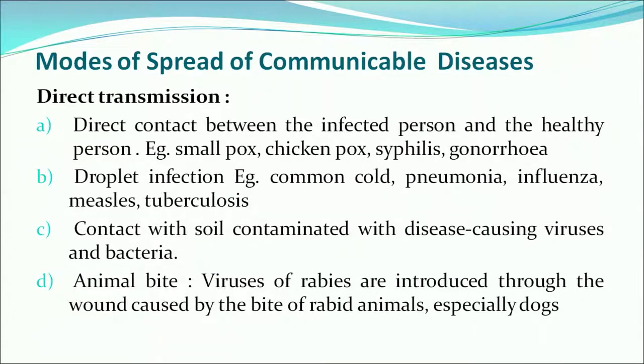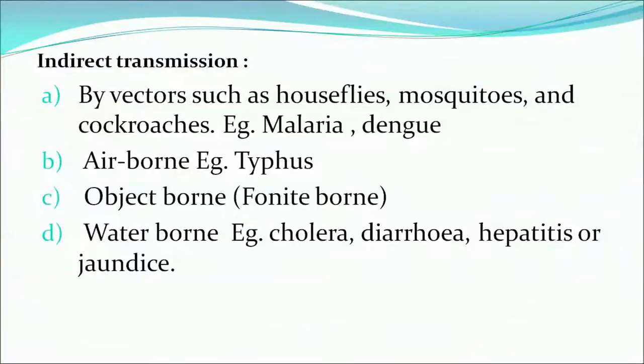It can also occur through animal bite. Indirect transmissions include vectors such as houseflies, mosquitoes and cockroaches — common examples are malaria and dengue. Then you have airborne diseases, example is typhus. You also have fomite-borne and waterborne diseases, examples being cholera, diarrhea, hepatitis or jaundice.